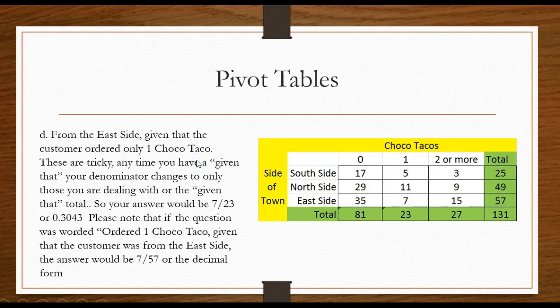Finally the toughest type question, and it's really the easiest type question, is when you're given that. They like to go in and say given that. When you see that on a pivot table or contingency table type question, they are simply changing the denominator.